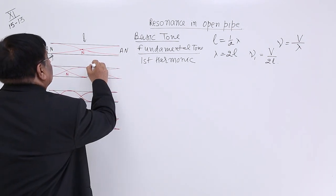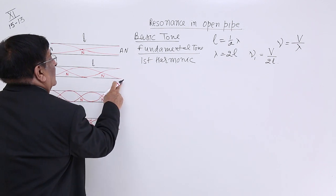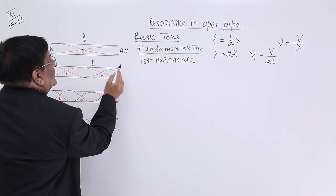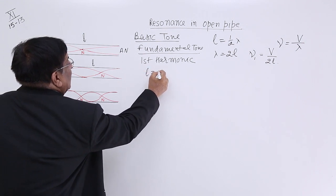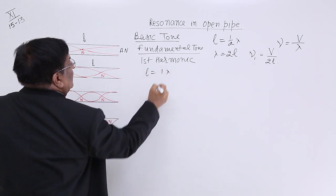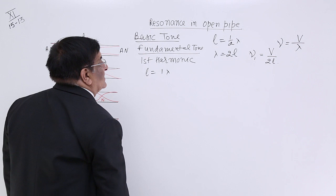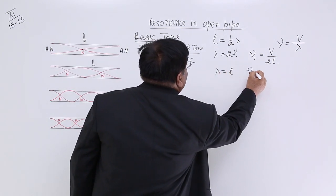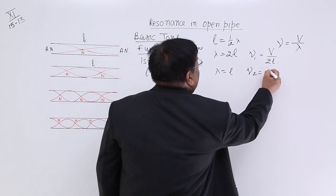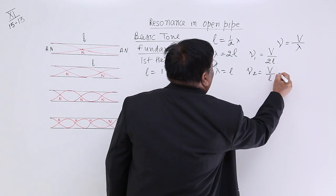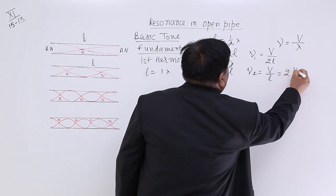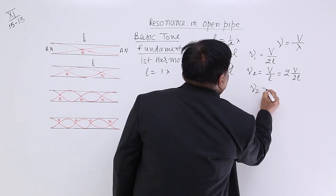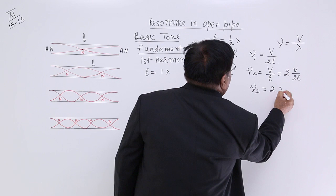Now here, if this is the length, how can we calculate frequency? We know this is crest to crest is 1 lambda. So here L is equal to 1 lambda. If L is equal to 1 lambda, lambda is equal to 1L, then this frequency is equal to V upon L or we can write as 2 V upon 2L. So nu2 is equal to twice nu1.